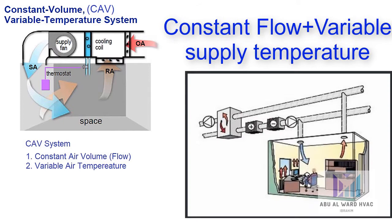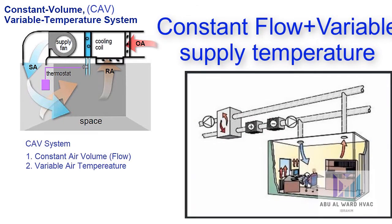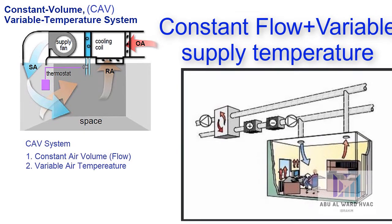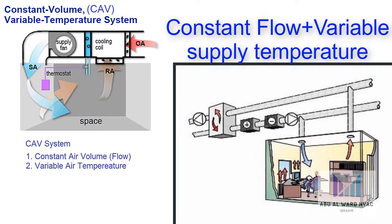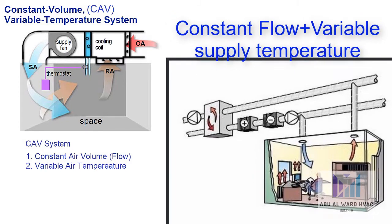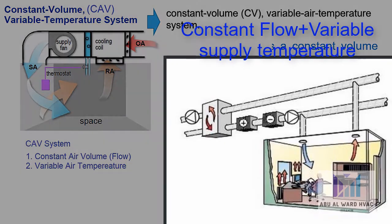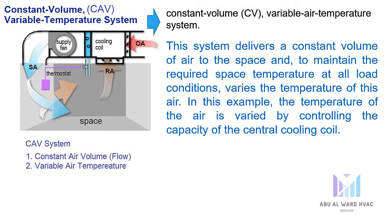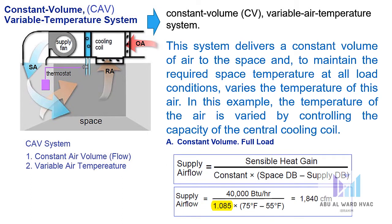When supplying air to the space, the temperature of the air will be varied while the CFM (air flow) will be constant. This system delivers a constant volume of air to the space and maintains the required space temperature at all load conditions by varying the temperature of the air. The temperature is varied by controlling the capacity of the central cooling coil.